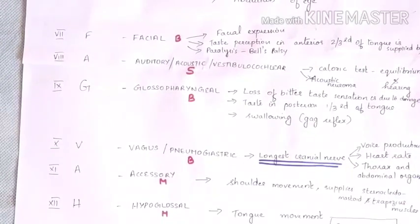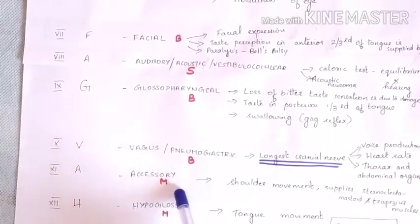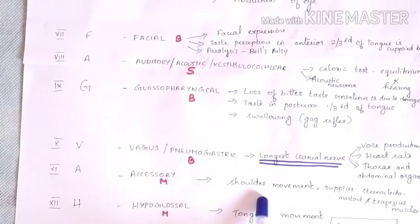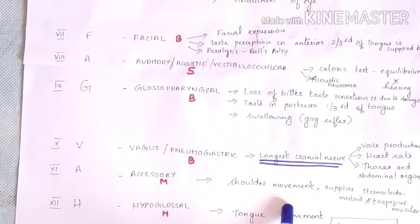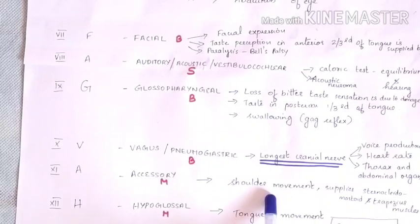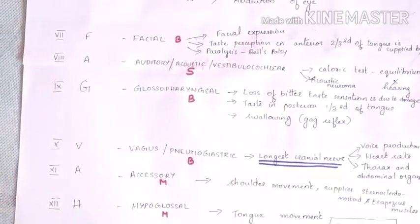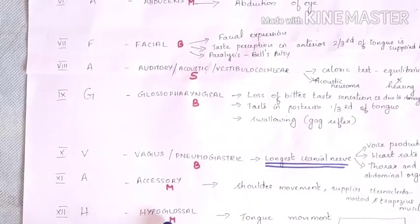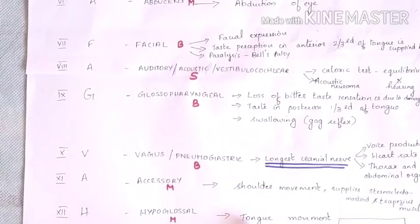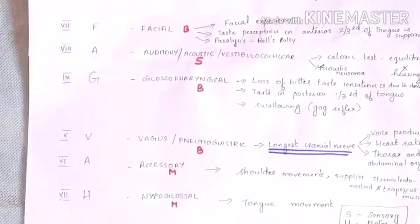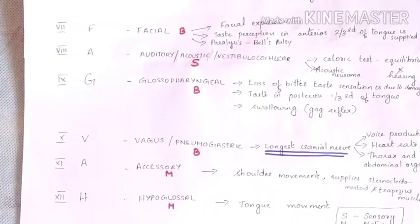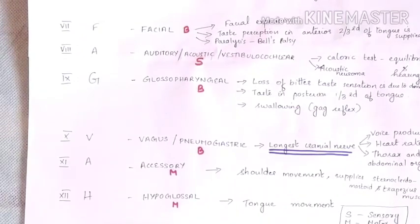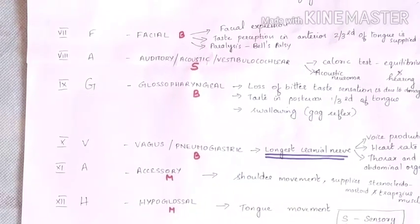The eleventh cranial nerve is the accessory nerve. It is a motor nerve that supplies the sternocleidomastoid and trapezius muscles, helping in shoulder movement. The twelfth cranial nerve is the hypoglossal nerve. It is a motor nerve that innervates the muscles of the tongue, helping in tongue movement.